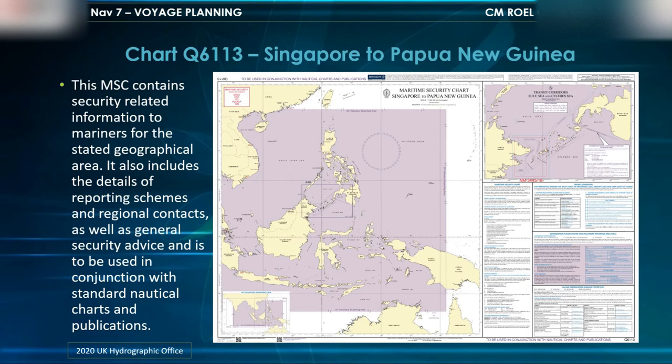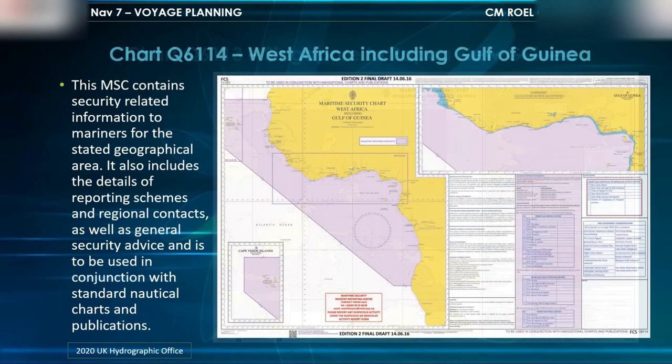Chart Q6113 covers Singapore to Papua New Guinea. Chart Q6114 covers West Africa, including the Gulf of Guinea.